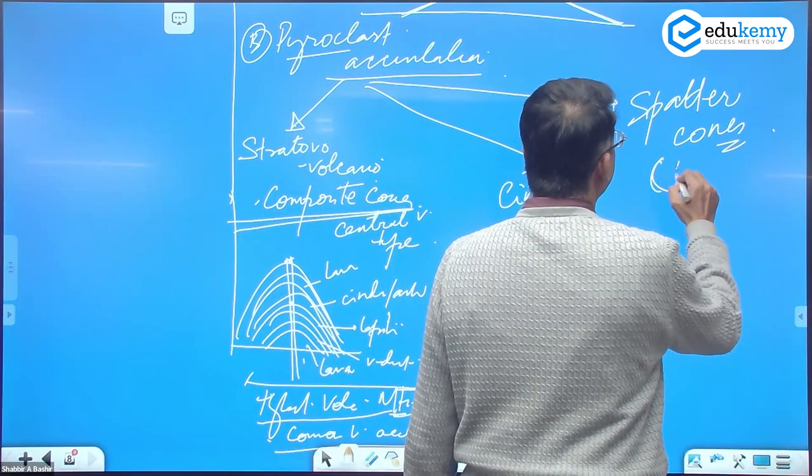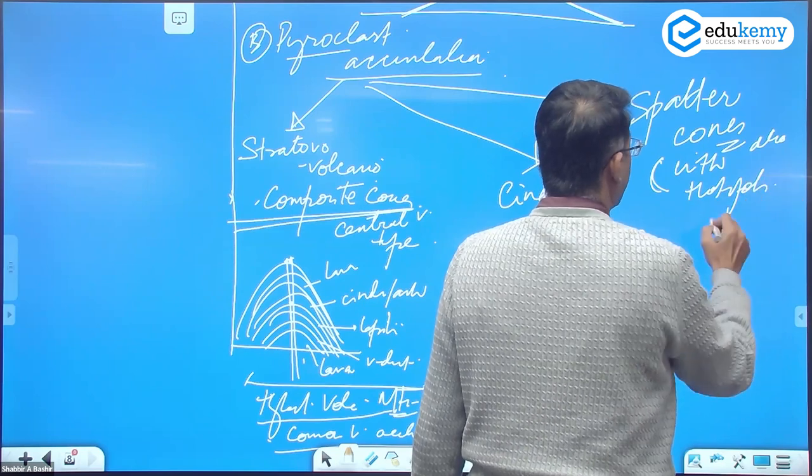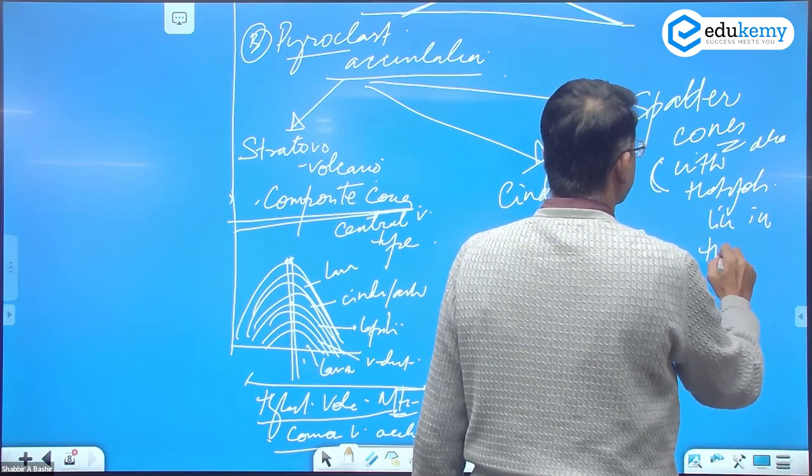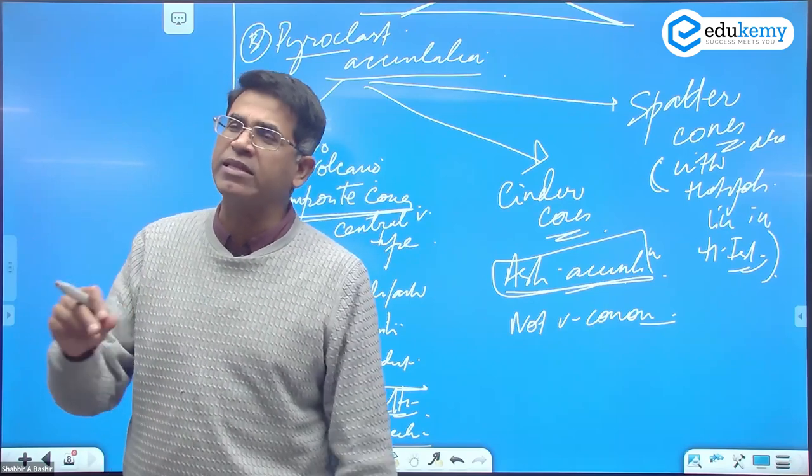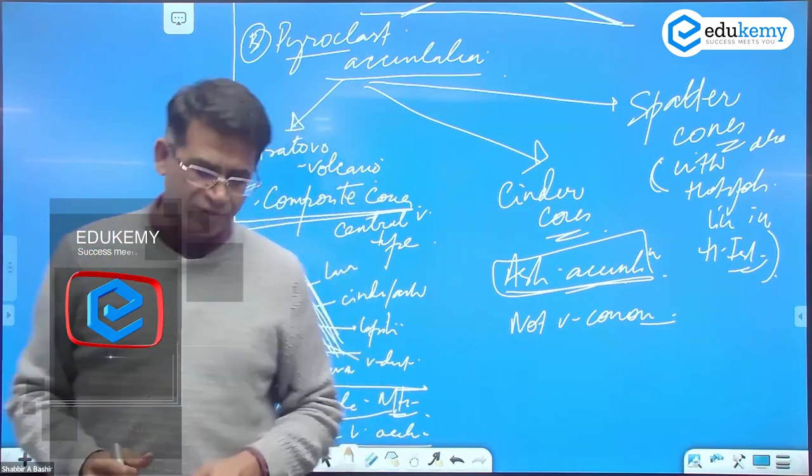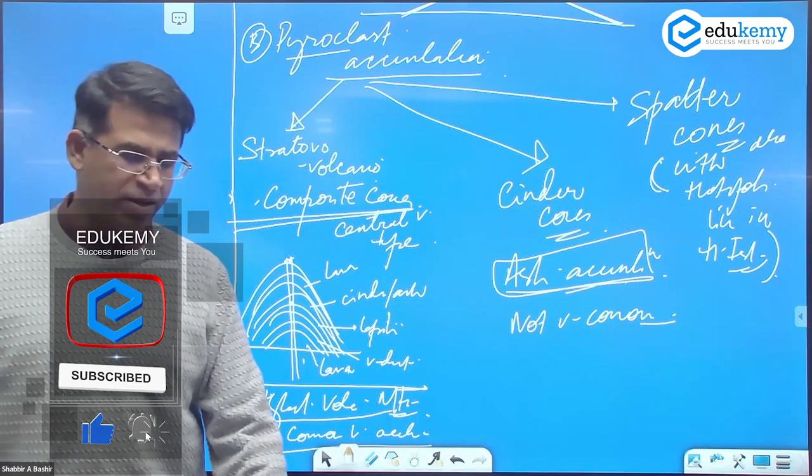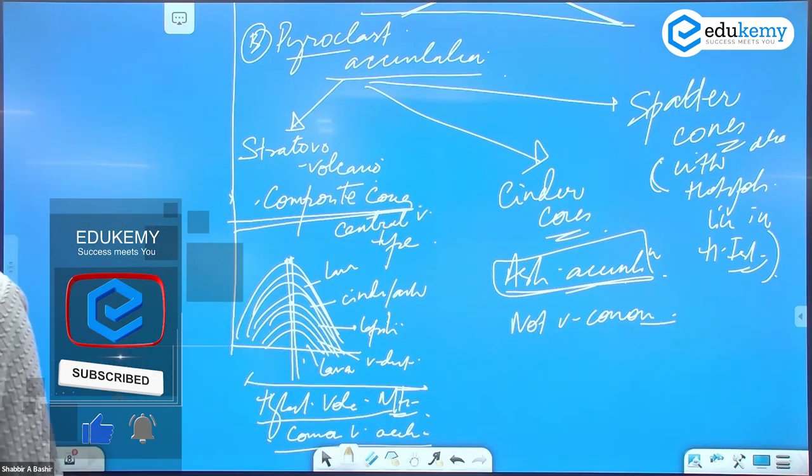You hot spots ke saath bhi milte hai. There are lumps of volcanic bombs accumulating, not very common but you can find them. Likha aapne itna details we don't need, but these are the main landforms of the extrusive.